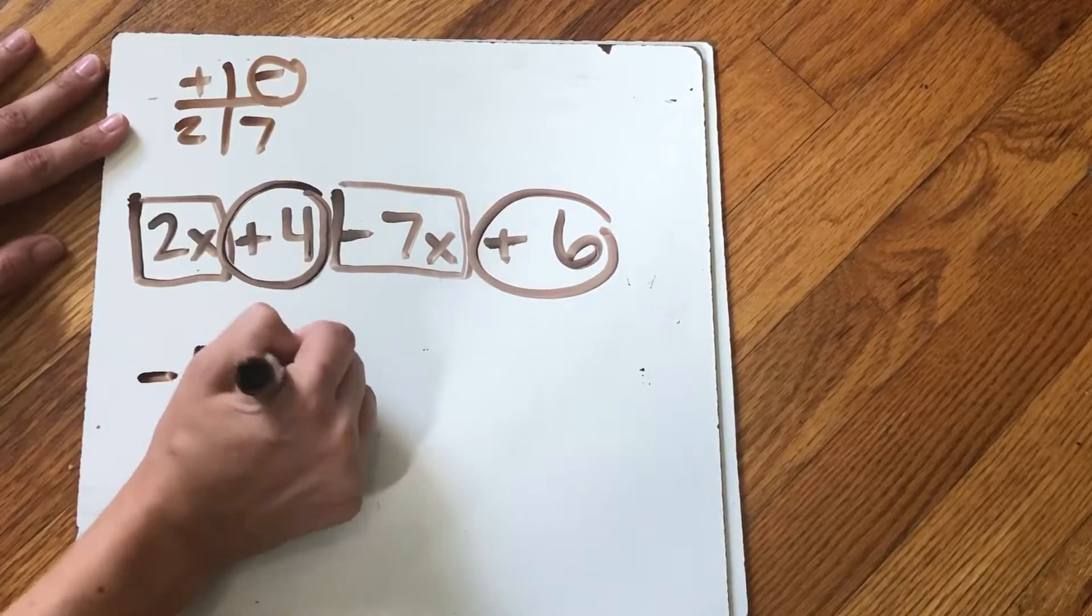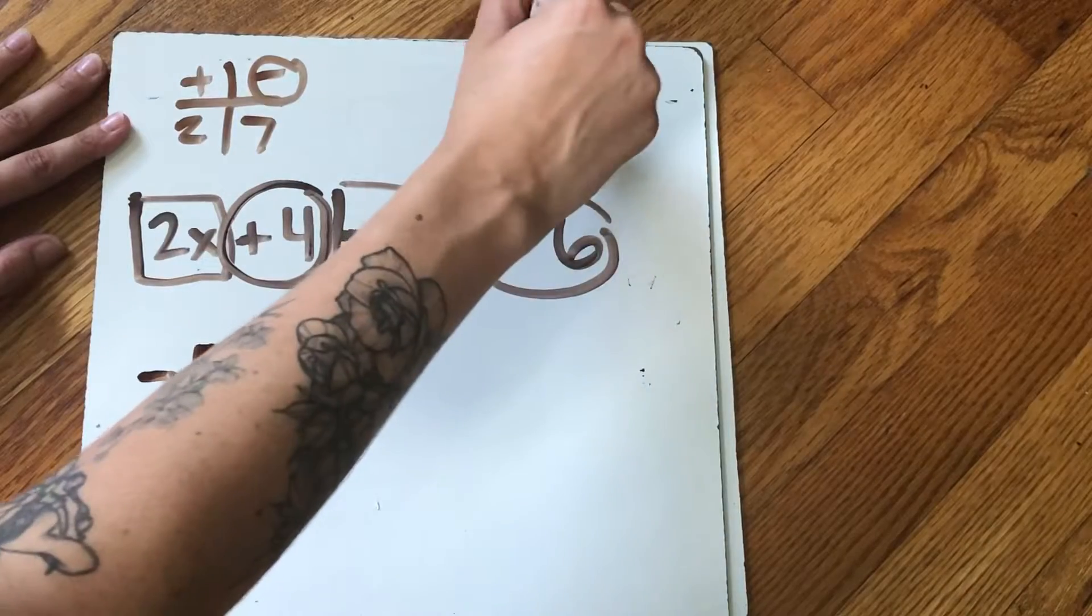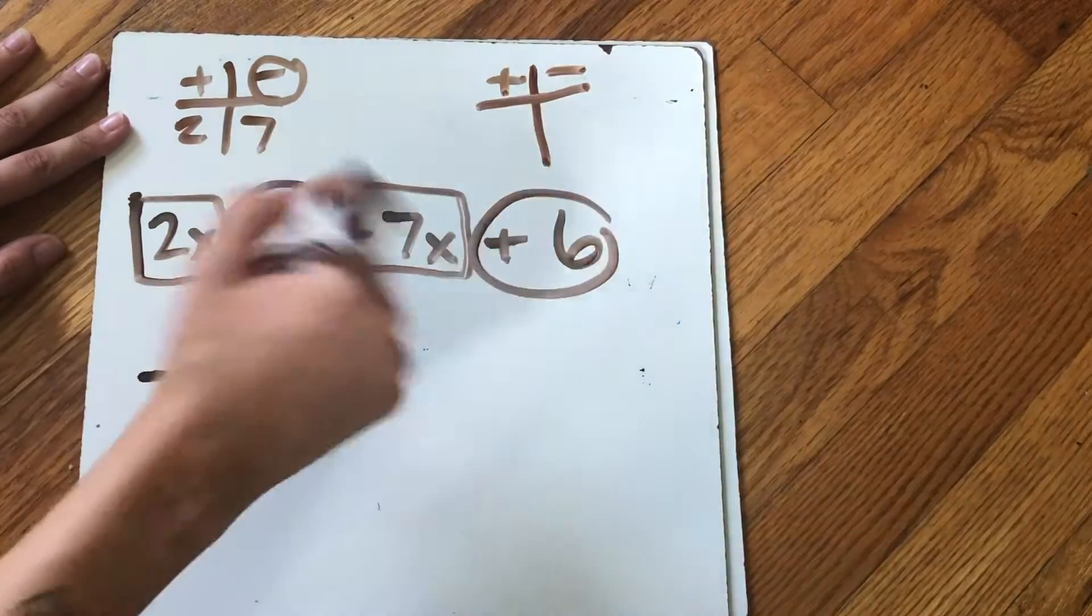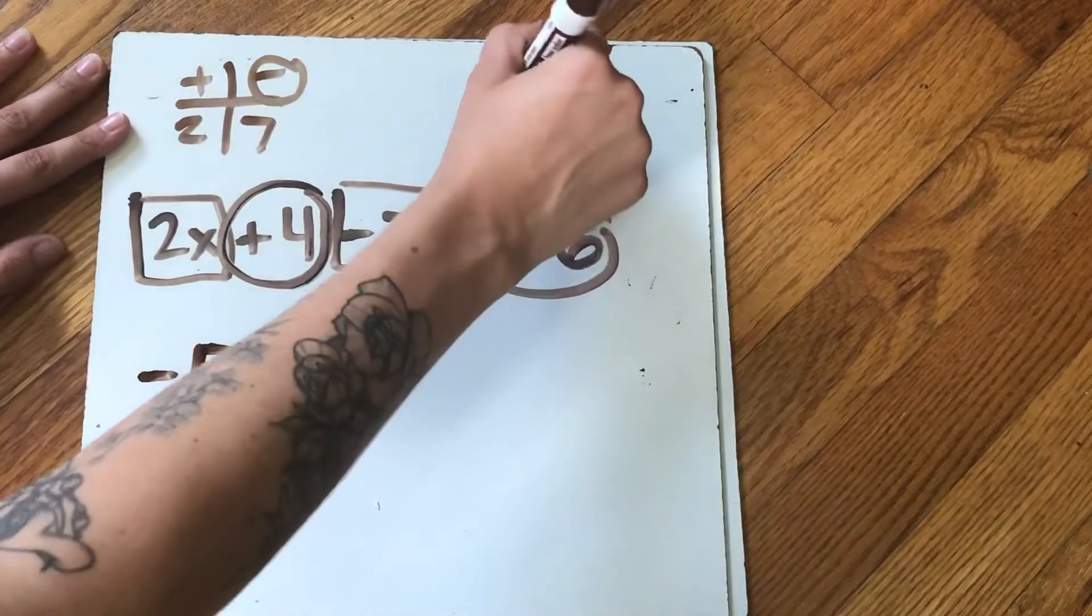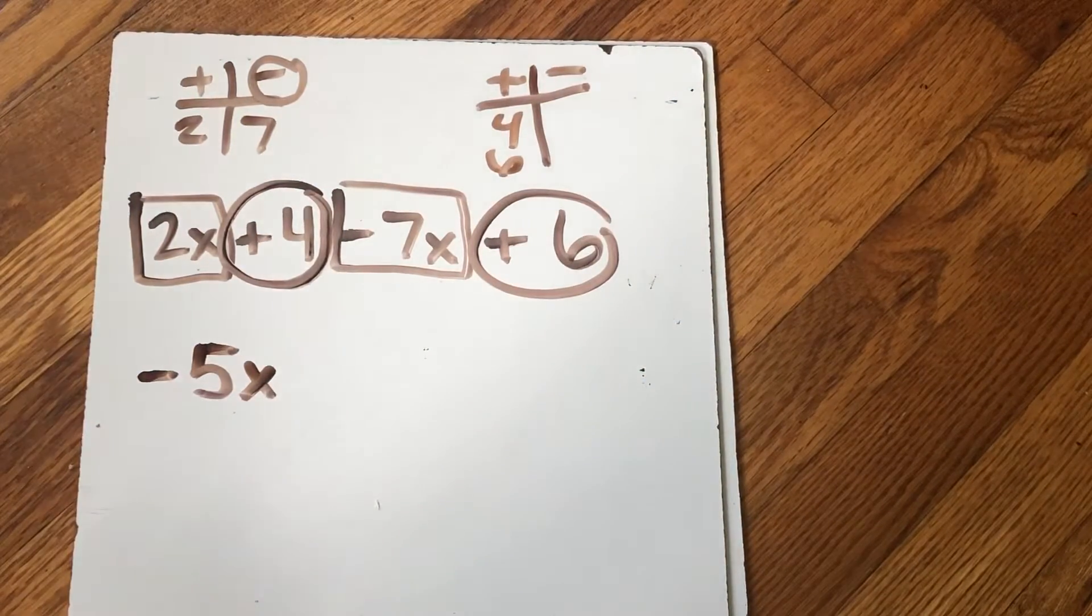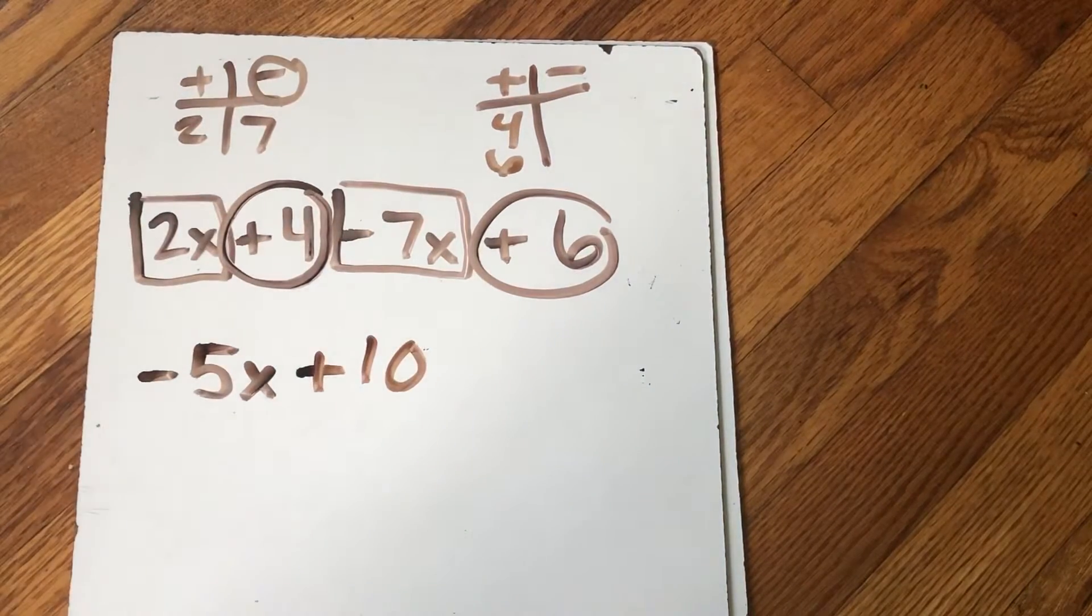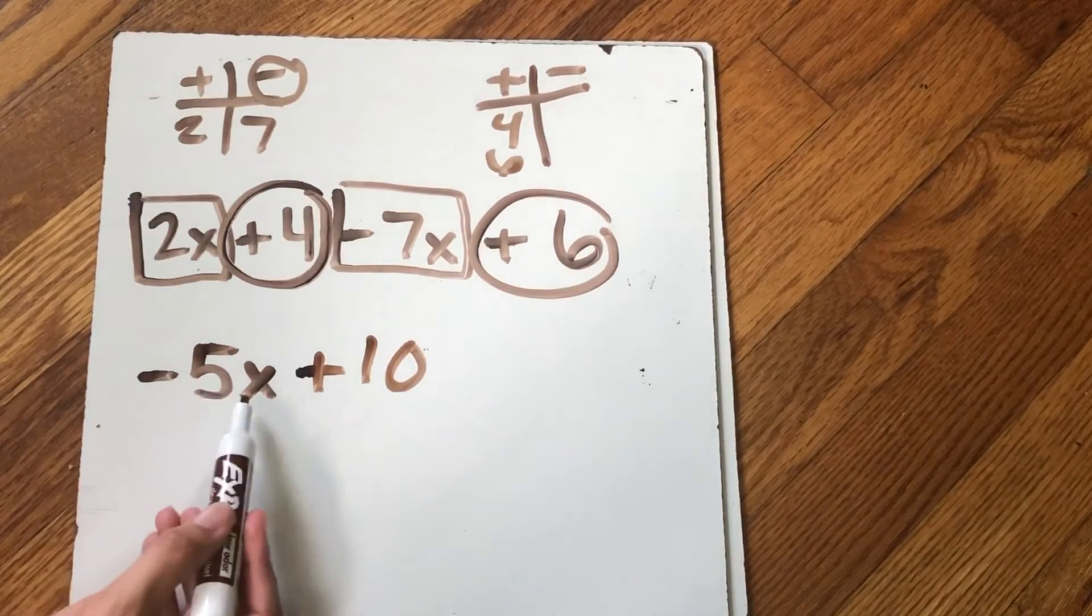And then I'm going to do a different t-chart. We have to do a separate one for these whole numbers. And I have positive 4 and positive 6. So I have 4 and 6. So they get all 10 of those points. Positive 10. So my simplified expression is -5x + 10.